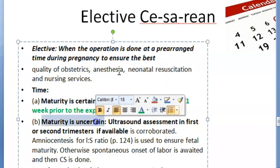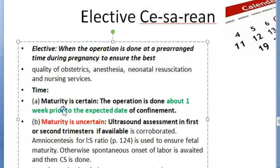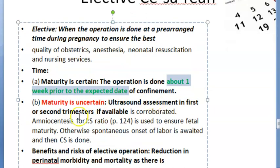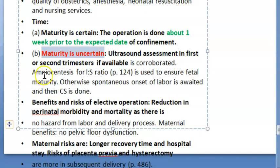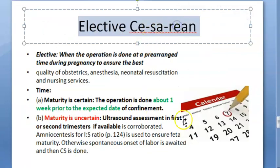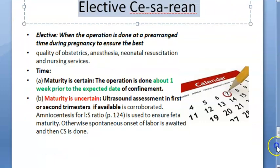Elective caesarean can be done when fetal maturity is certain or uncertain. When you are certain of fetal maturity, it will usually be around one week prior to the expected date of confinement. If maturity is uncertain, you wait for the onset of labour and then perform the caesarean. The benefit of elective caesarean is that fetal maturity is ensured, reducing morbidity and mortality.